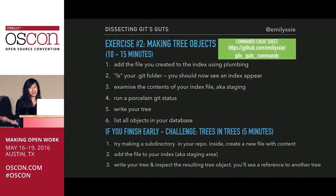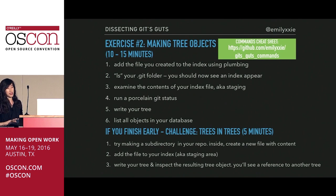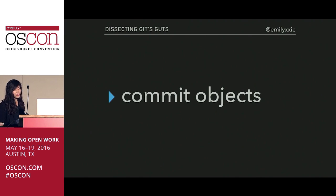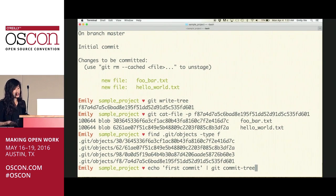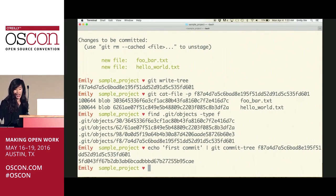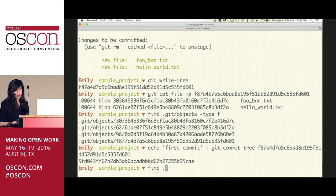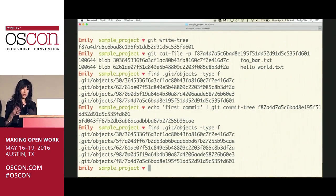But it still seems like we're missing some metadata. We don't have any information about who saved these snapshots, what time they were saved, or why they were saved. So enter the concept of the commit object. Let's create a commit object using the plumbing command commit-tree. I'll echo the commit message and pipe it in, passing in the SHA hash of the tree object. Like with all objects, we get a SHA hash back, and Git sticks it into the objects database.